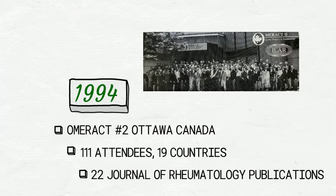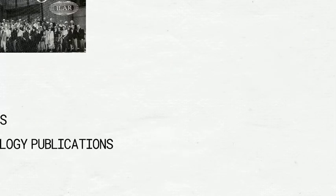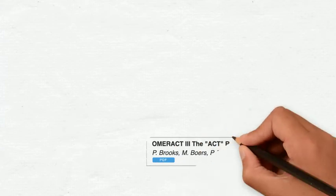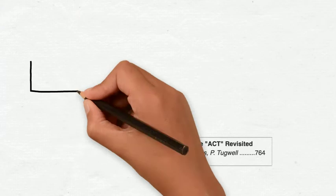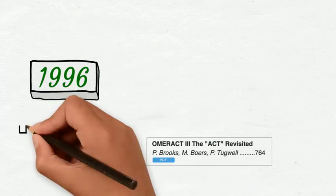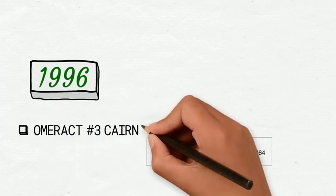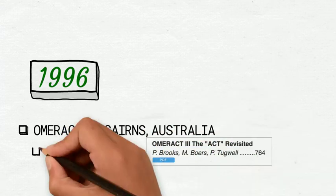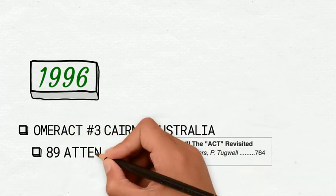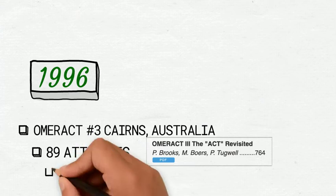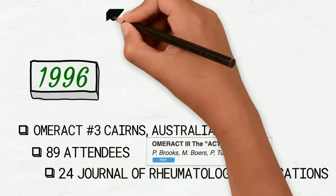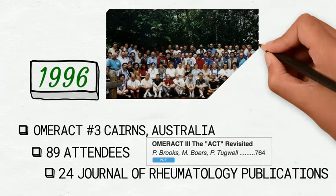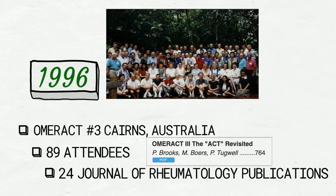These recommendations continue to be refined as data from randomized clinical trials becomes available. OMERACT, now redefined as Outcome Measures in Rheumatology, held its third conference in 1996 in Cannes, Australia. OMERACT recommended core sets of outcome measures to be utilized in randomized clinical trials in osteoarthritis and osteoporosis, initiated discussions of psychosocial measures, and began to address issues related to radiographic and MRI imaging in rheumatoid arthritis.